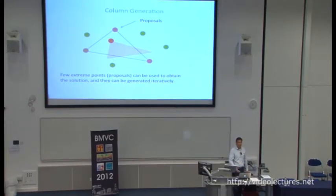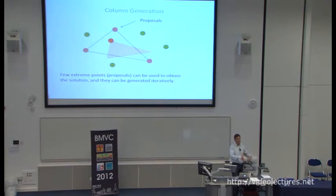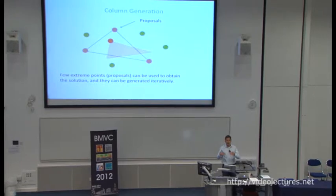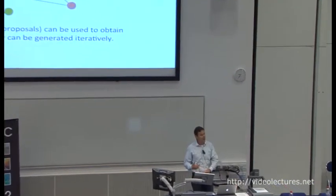At each step we choose a new proposal that optimizes some gain. The key concept is that if you choose the right structure for the problem — in this case by using linearly augmented trees — what initially looks like a very difficult problem can be recognized for its structure, and the proposal generation is cheap since it can be done via dynamic programming.